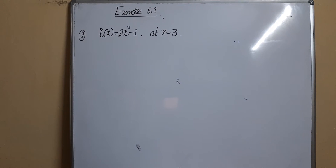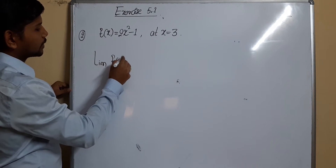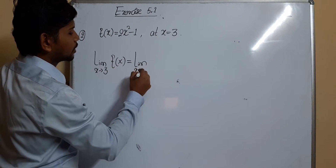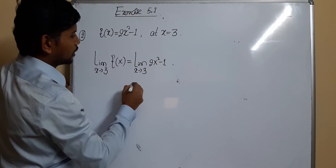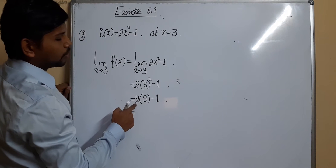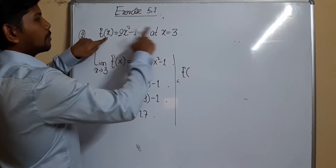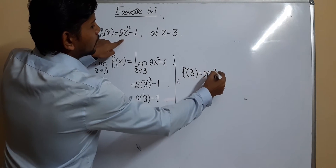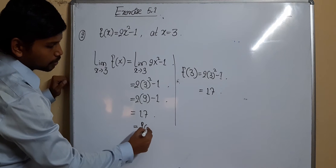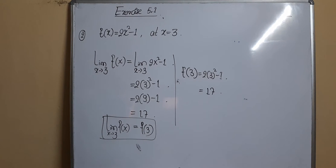Next, f(x) = 2x² − 1 at x = 3. The limit of f(x) as x tends to 3 equals 2(3²) − 1 = 2(9) − 1 = 18 − 1 = 17. The value f(3) = 2(3²) − 1 = 17. Since the limit equals f(3), the function is continuous at x = 3.